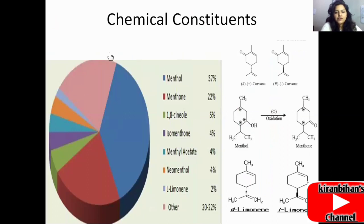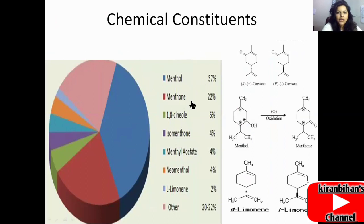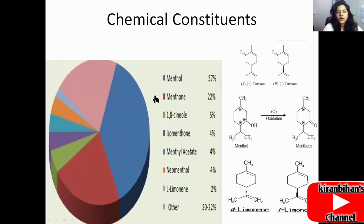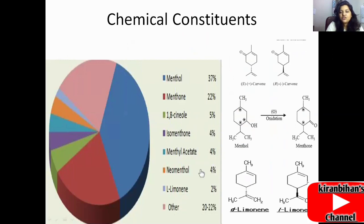The chemical constituents of Mentha piperita include menthol at 37%, menthone at 22%, 1,8-cineole at 5%, isomenthone at 4%, methyl acetate at 4%, neomenthol at 4%, and other minor constituents. These are the main chemical constituents of Mentha piperita.